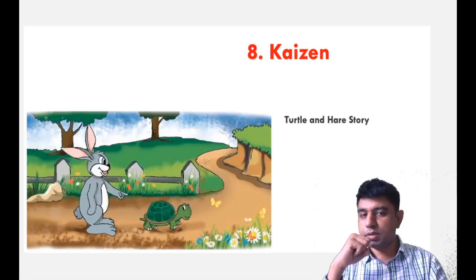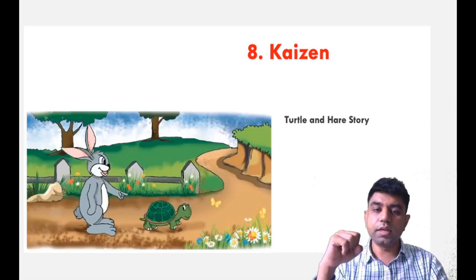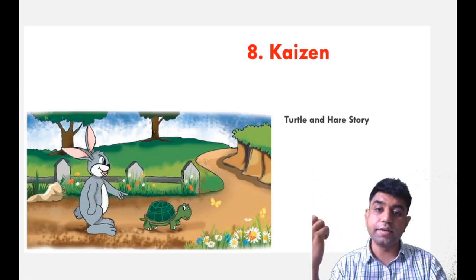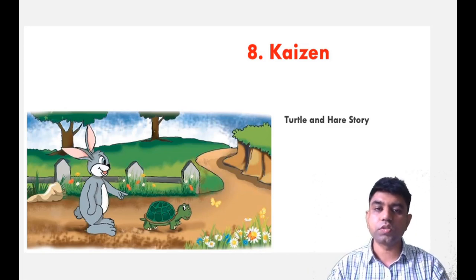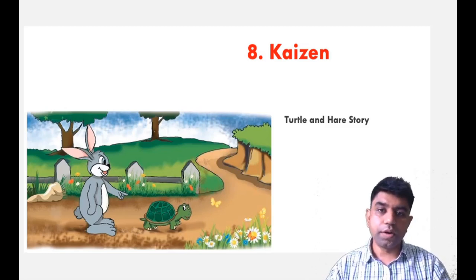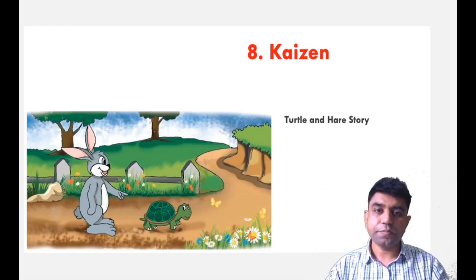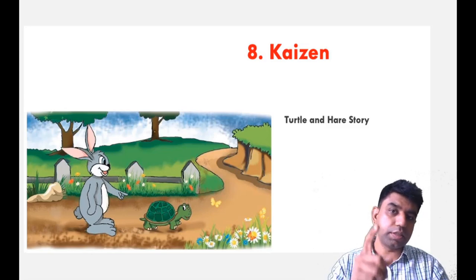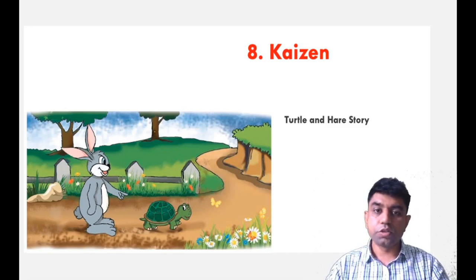In order to understand this topic, let us hear a very interesting story — the story of the hare and the turtle, which we all know from our childhood. They both go for a race. The tortoise is a very slow mover; the rabbit moves fast, but the rabbit takes a halt in between, thinking he has run enough and will win. Meanwhile, the turtle keeps taking small but continuous steps, and ultimately the turtle wins.